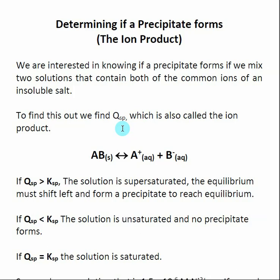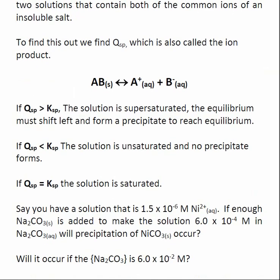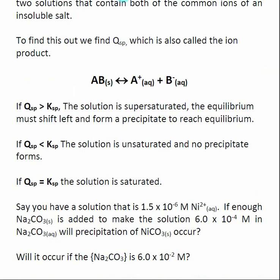Remember, Q means that we're not sure. So once you find Q, then you compare Q to Ksp. That's going to tell us where we're at in relevance to the equilibrium.